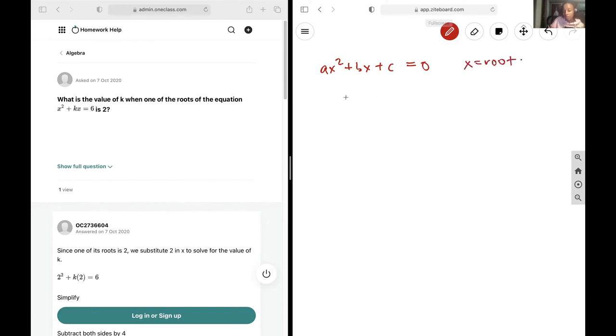So what this means is we can verify what k is by moving everything to one side. And then you're just going to put x is equal to 2 and this solution should hold. So we get 2 squared plus 2k minus 6 is equal to zero.